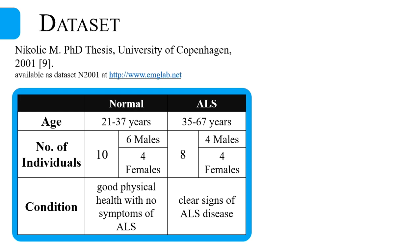For experimental purposes, we use a publicly available dataset which is part of Nicolic's PhD thesis and is available on emglab.net. In this database, the normal group consists of data acquired from 10 healthy subjects including 4 females and 6 males aged between 21 to 37 years, all with good physical health and no symptoms of ALS. The ALS class consists of 8 patients with equal numbers of male and female subjects aged from 35 to 67 years with clear signs of ALS.